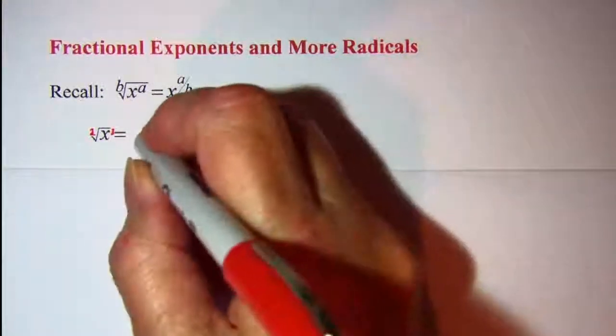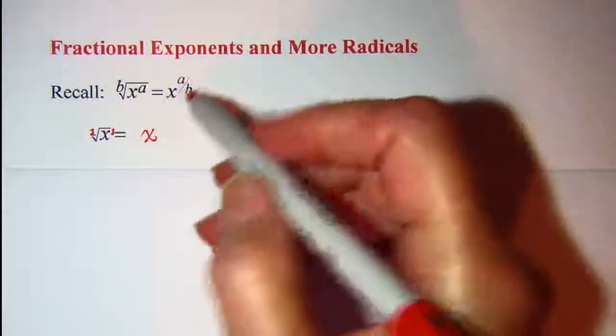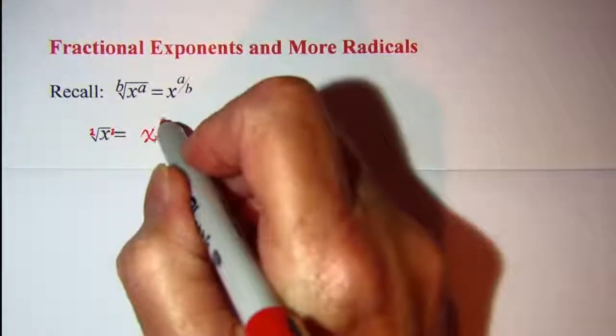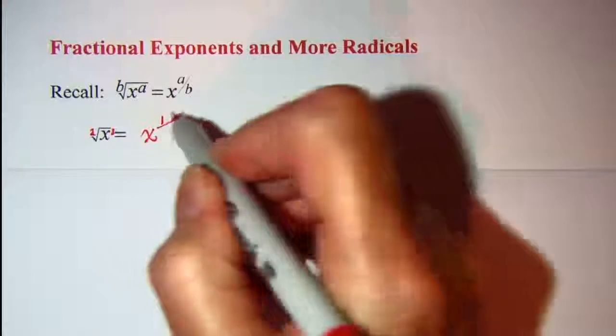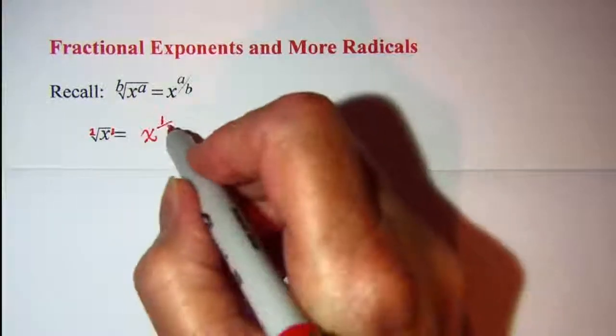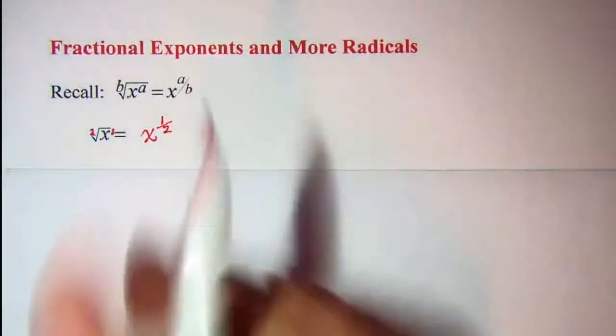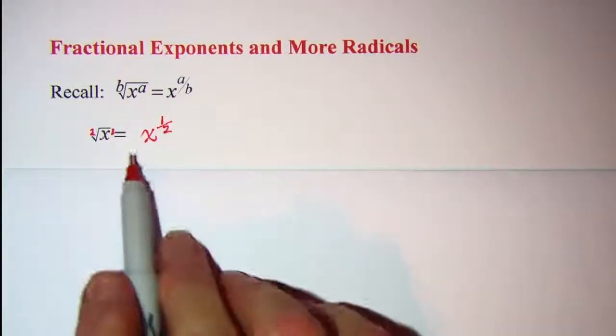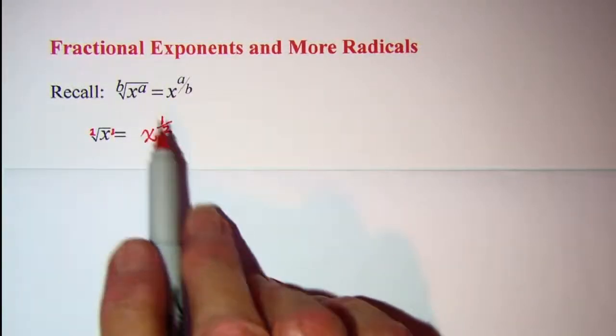We write our base of x and then the numerator on the exponent is 1 and the denominator on the exponent is 2. So square root of x can be written as x to the 1 half.